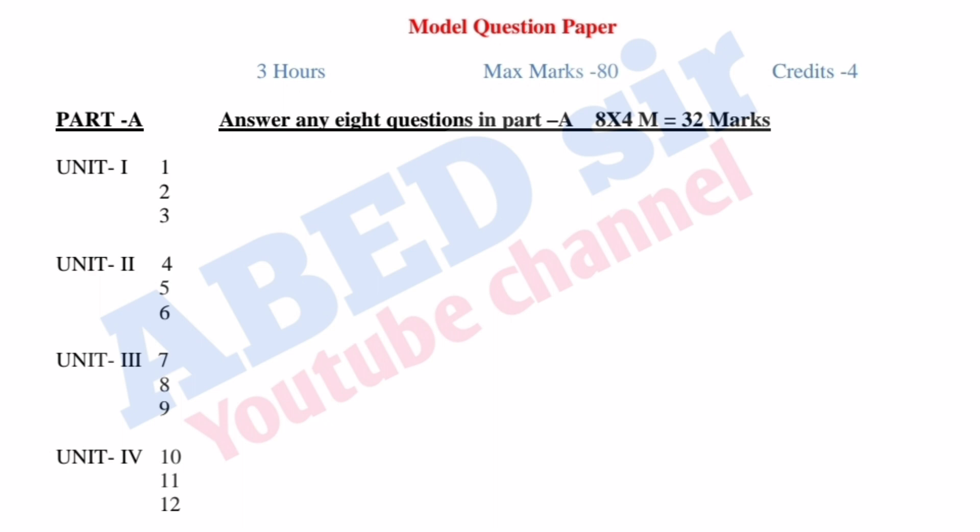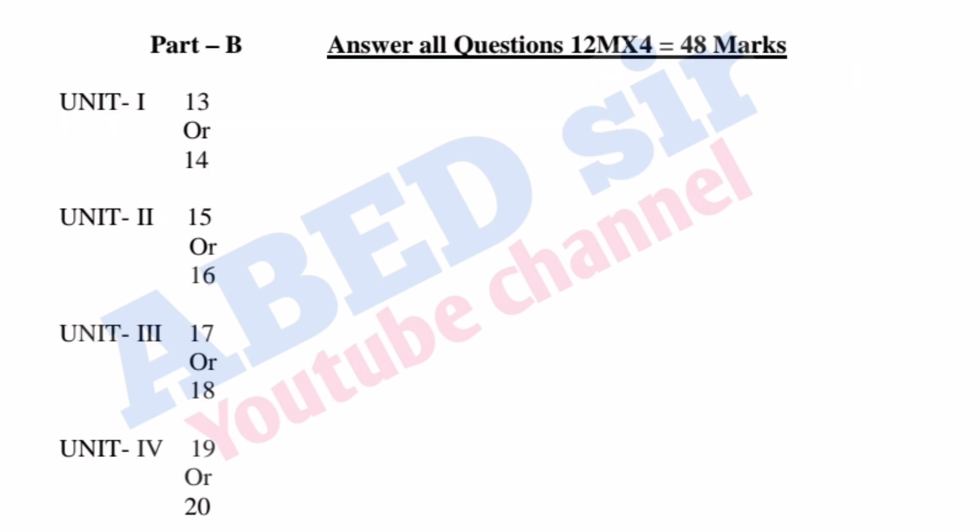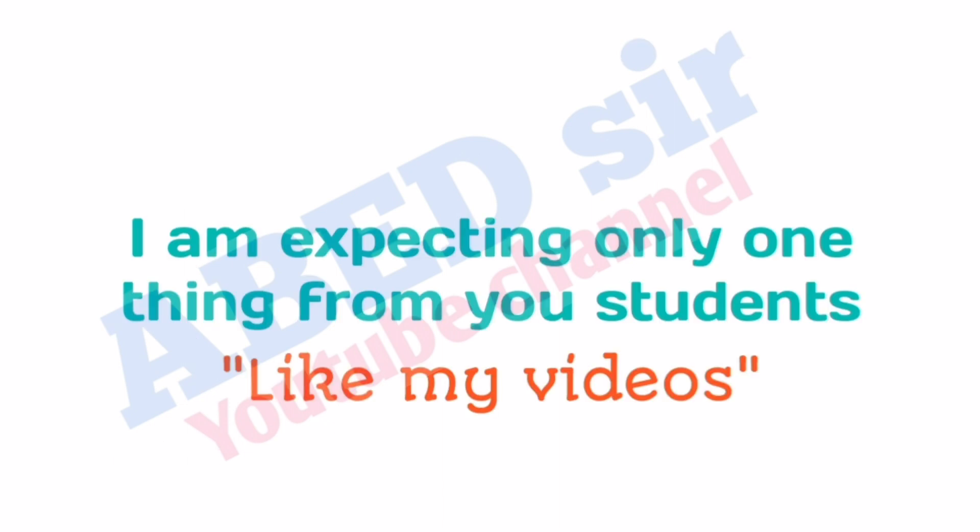In Part B, a total of 4 questions will be asked. There is a mutual choice. You have to answer all 4 questions and each one carries 12 marks — so 4 times 12 is 48 marks you will get from Part B. This is the question paper pattern. I hope you understand.